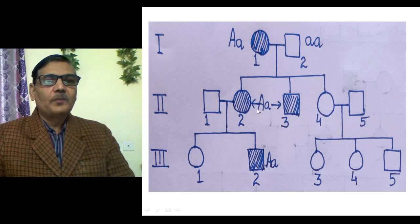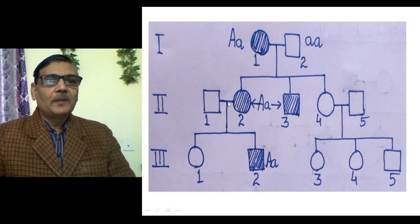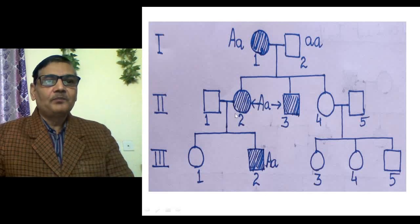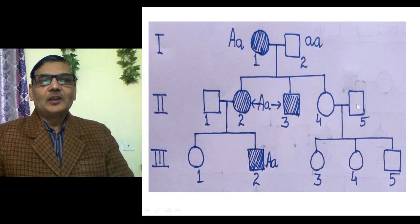In the next generation, this couple has three children, out of which two are sufferers — individuals two and three in generation two are showing the trait. In the second generation, the husband is normal and the wife is showing the disease; in the next generation they have one child who is a sufferer. This is because this female of the second generation received the dominant allele from her mother and inherited it to the third generation. The fourth individual of the second generation is totally normal, meaning the dominant allele is completely absent in that case.